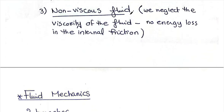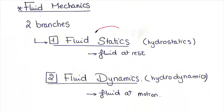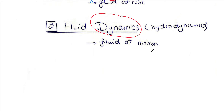Fluid mechanics has two main branches. Branch one is fluid statics, when the fluid is at rest and not moving — also called hydrostatics. Branch two is fluid dynamics, when the fluid is in motion — also called hydrodynamics. In this lecture we will study the first part, which is fluid statics.